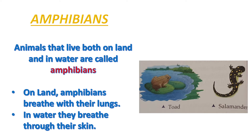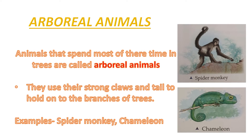What are amphibians? Animals that live both on land and in water are called amphibians. Did you know this fact? On land, amphibians breathe with their lungs. In water, they breathe through their skin.